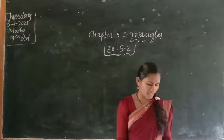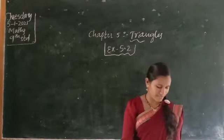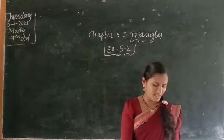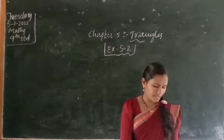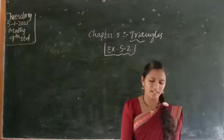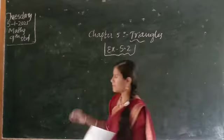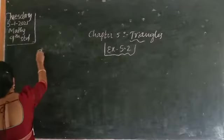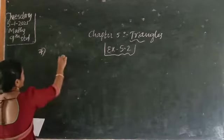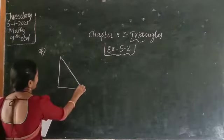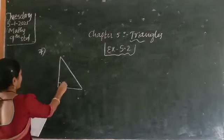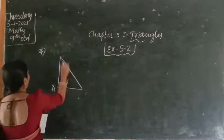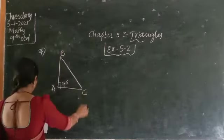Here, ABC is a right angle triangle. You have to draw the right angle triangle ABC with the given values. Angle A is 90 degrees and AB is equal to AC. Find angle B and angle C. Draw the given triangle — take the 7th portion and draw the right angle triangle.